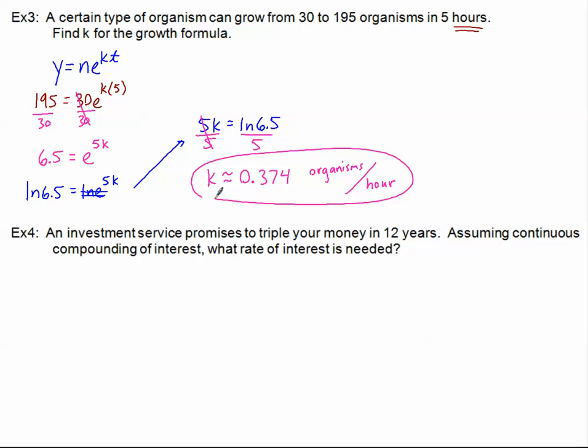This is a constant, and in this case, that represents organisms per hour. Of course we're growing. That's why the constant is positive. If the constant were negative, then we would be decaying. So this is increasing about a third per hour.